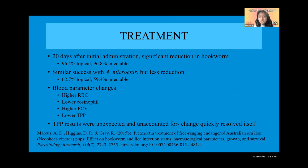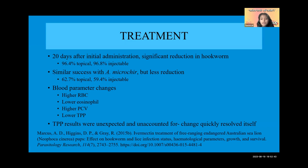Ultimately, there was no statistically significant difference between topical and injectable ivermectin in terms of effectiveness. Both forms of ivermectin functioned to address the problem of anemia. However, there was one unexpected finding: TPP results were unaccounted for — TPP was lower for a significant portion of time, which is the opposite of the desired effect.